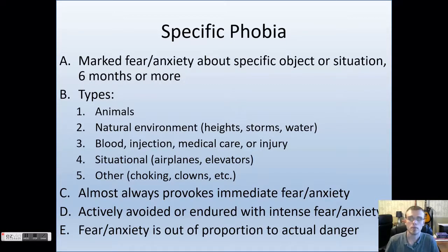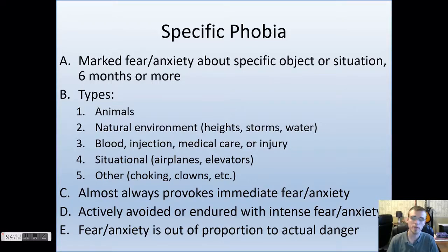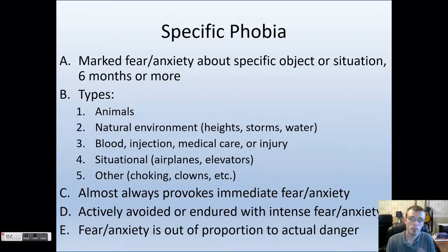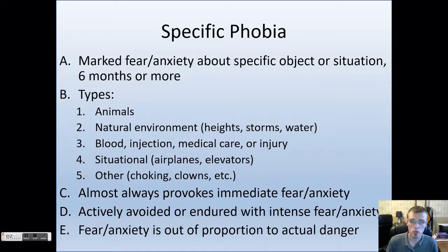Moving forward, let's talk about specific phobia. Basically, specific phobia is a marked fear and anxiety about a specific object or situation, and this fear has to last for at least a six-month duration. There are many different types of things people can become fearful or anxious about, including a variety of animals, natural environments such as heights, storms, water, other catastrophes, blood, injection, medical care or injury, situational environments such as airplanes and elevators, and other things like choking or clowns — really anything. The anxiety and fear has to almost always be provoked every time the person is exposed to the thing, and the person must actively try to avoid these situations or experience intense fear and anxiety when in them.